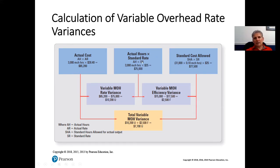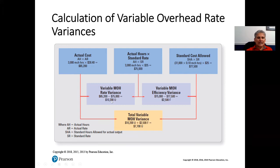We then compare actual hours × standard rate ($75,000) to the pure budget of standard hours allowed × standard rate = $77,500. The difference is $2,500 favorable, since $75,000 is lower than $77,500. Combining the two: $10,200 unfavorable plus $2,500 favorable gives an overall unfavorable variance of $7,700. Rather than concluding everything is wrong, we can see the rate was higher than expected, but efficiency was actually better — so focus on purchasing rather than production.